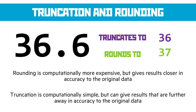Truncation and rounding are two different methods for simplifying a floating point number into an integer. Truncation simply removes the decimal, while rounding finds the closest whole number. So 36.6 truncates to 36 but rounds to 37 because it is closer to 37. Rounding is computationally more expensive but gives data closer in accuracy to the original. Truncation is very easy to do computationally but can give results further from the original data. The decision comes down to whether accuracy or computational speed is more important.